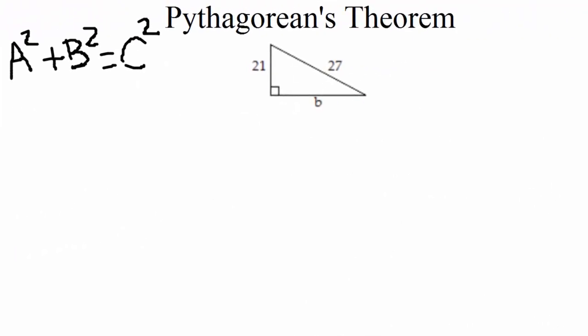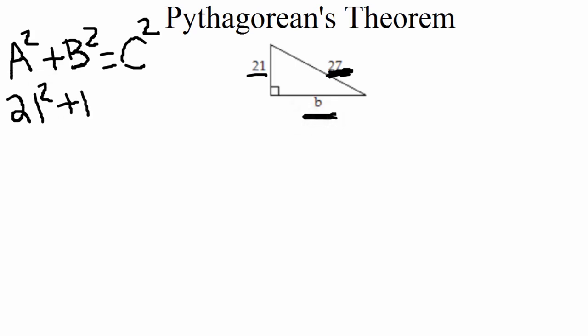Let's work another example. Looking at the triangle here, we have that box in the corner signifying it's a right triangle, so we can use the Pythagorean theorem. We're given a leg of 21 and the hypotenuse of 27, and we're solving for the other leg. Plugging into the formula: the sides are a and b, the hypotenuse is c. So 21 is a — 21 squared plus b squared equals 27 squared. We're solving for b.